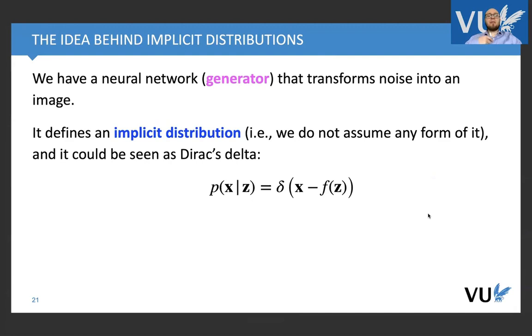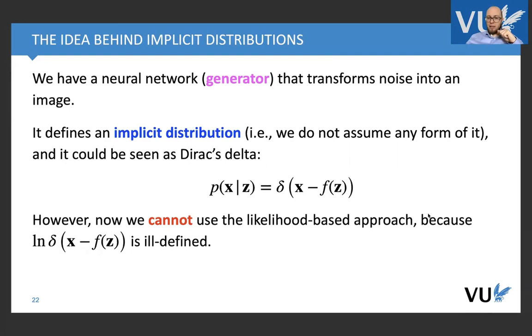That's why we call this implicit, because implicitly we model a distribution, but actually we have no idea what kind of distribution it is. The idea behind implicit models or implicit distributions is that we have a neural network, a generator that transforms noise into an image or an object, and it defines an implicit distribution. We do not assume any form of it, and we can see it as dirac delta. For a given output of the neural network, we have infinite probability mass at this point. It cannot be used to evaluate likelihood function because it's logarithm of dirac delta, which is ill-defined. We cannot use likelihood function, so we need to use some kind of different approach.